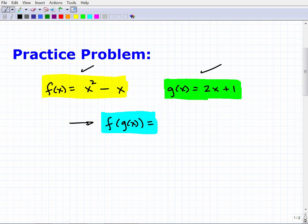Okay so what are we talking about here? Well I have two functions. I have the function f of x so f of x is equal to x squared minus x and then you have g of x is equal to 2x plus 1 and I want you to find f of g of x. So this is what we call a composite function.